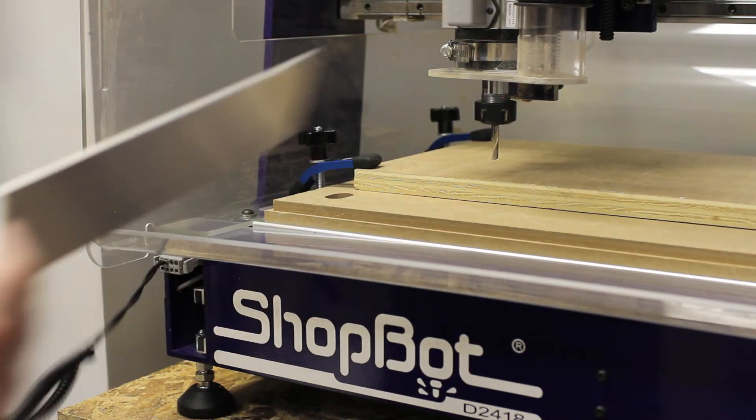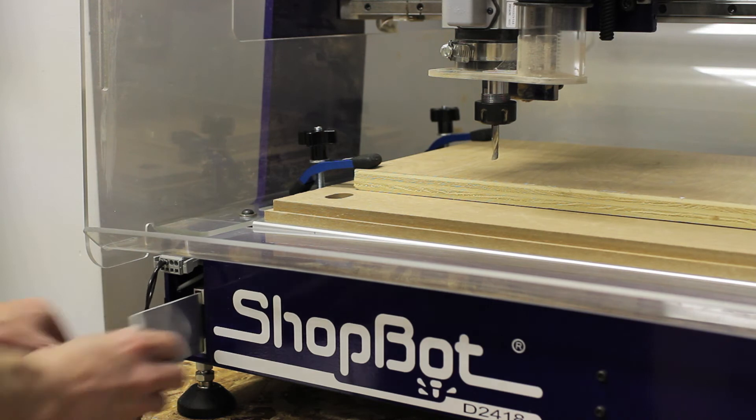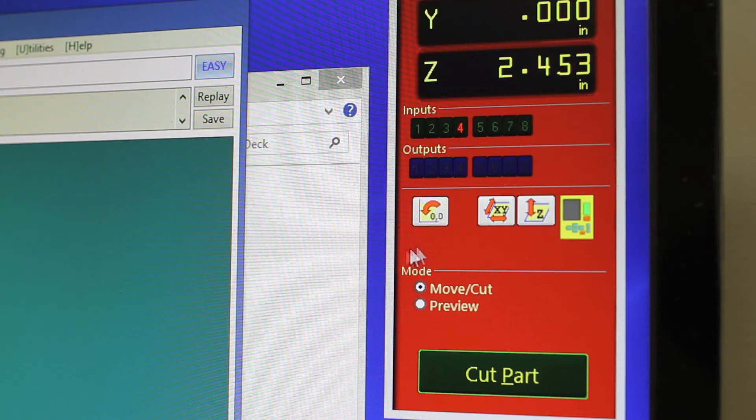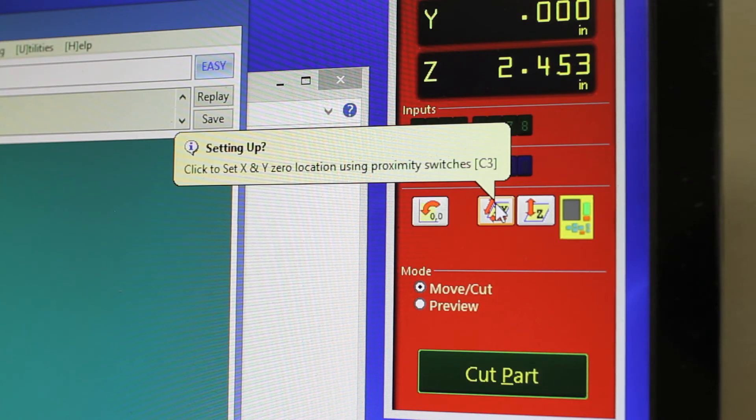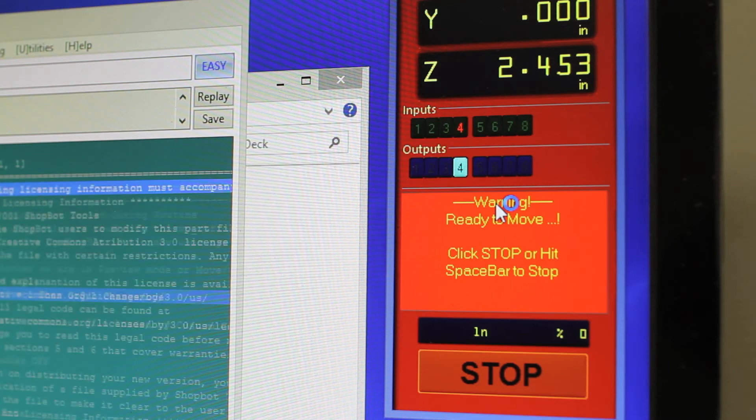Now the bit is zeroed in the Z axis and we need to zero it in the X and Y axes. That's a good deal more simple. All you do is click on this button in the software and the machine will automatically zero the X and Y axes for you.